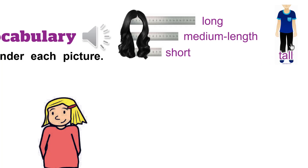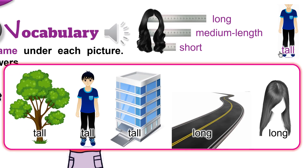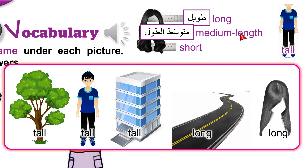People could be tall, medium height, or short. What is the difference between long and tall? We usually use tall to describe people or things that are high, like a tall tree, a tall boy, a tall building. Long is used to describe things that are great in length, like a long road or long hair. Long is the adjective; length is the noun.